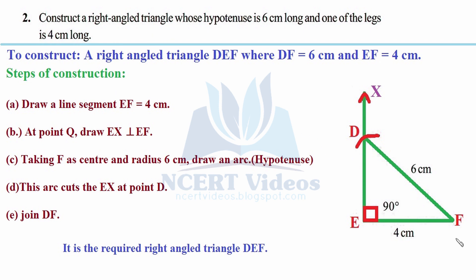Steps of construction: we have named this triangle as DEF, right-angled at E. One side is 4 centimeters, so we take EF as the base. At point E, construct a 90-degree angle — draw a semicircle with a small radius, then put the needle on each side of the semicircle to draw arcs, dividing 180 degrees into two equal parts of 90 degrees each. This gives you the perpendicular at E.